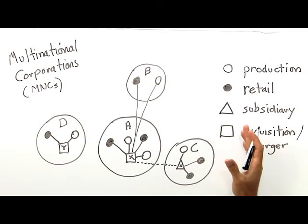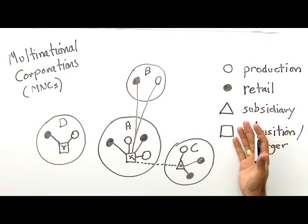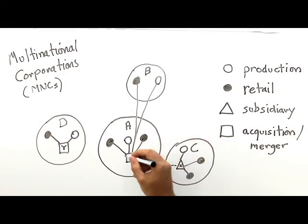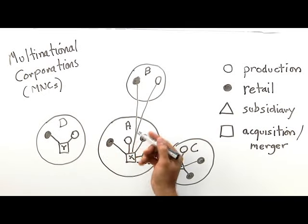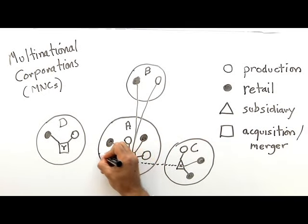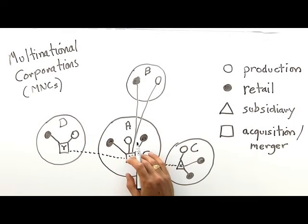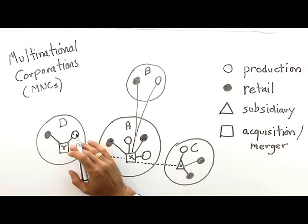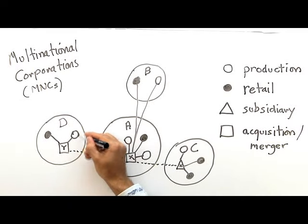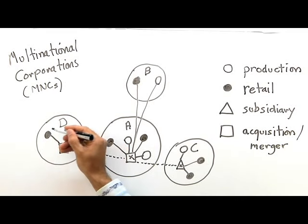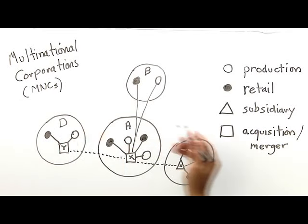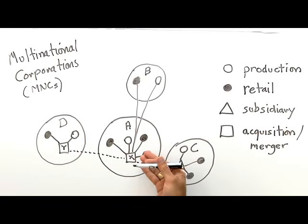Rather than establishing a wholly owned subsidiary inside State D, why don't we just try to purchase Company Y? And so, Company X may purchase Company Y in State D, and thus control both the production facilities and the retail outlets of that company. They will become part of Company X.